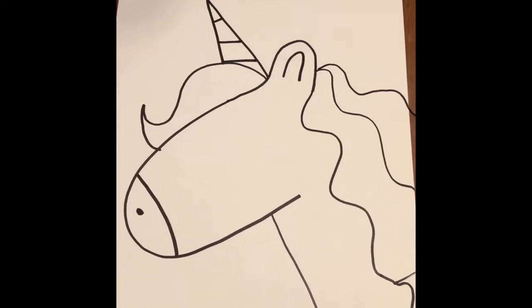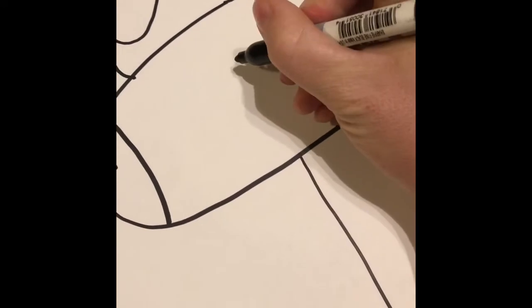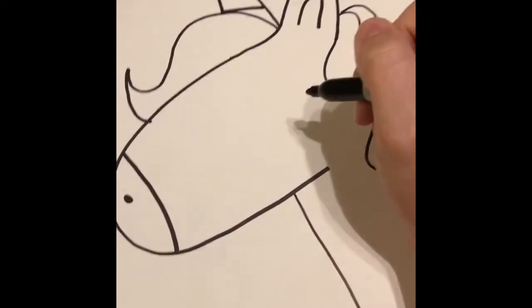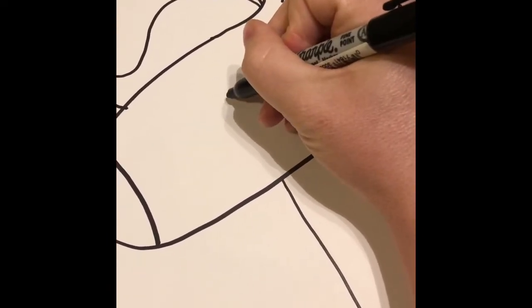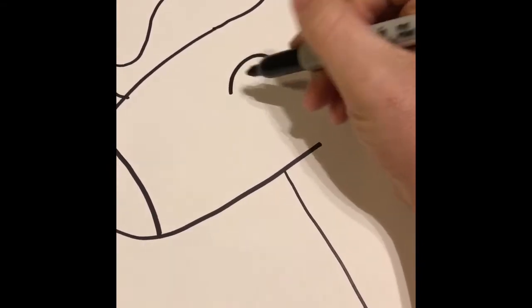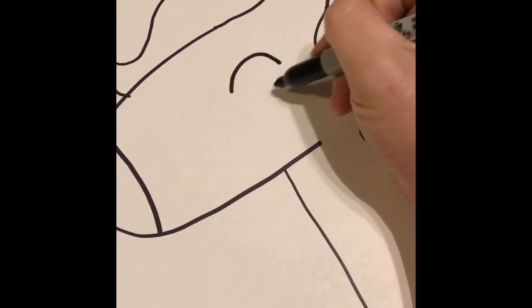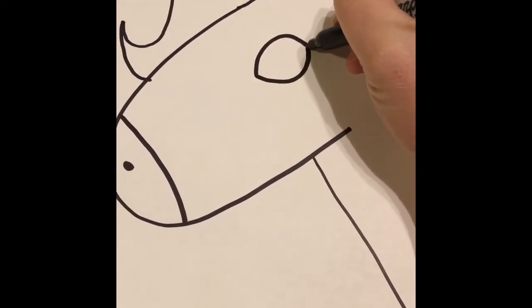So the next thing is we're gonna draw an eye. You have a couple of options. A lot of times people like to draw their unicorns where it kind of looks like they have their eyes closed. So if you wanted to do that you would just make a U with some eyelashes. I'm gonna do our unicorn with their eye open. So I'm gonna make an almond shape. I'm just gonna make a curve and then I'm gonna make the same curve but underneath.